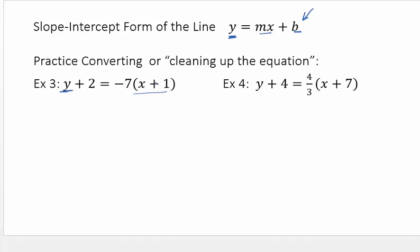So the first thing I would do is get rid of my parentheses on the right by distributing the negative 7. So I have y plus 2 equals negative 7x minus 7. And then I need to get y by itself. So good old Algebra. I want to do the opposite of plus 2. So I'm going to subtract 2. So I have y equals negative 7x minus 9.